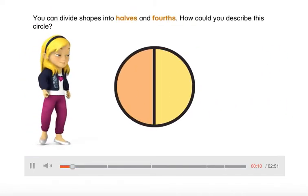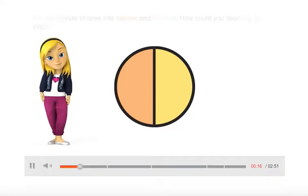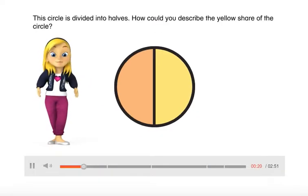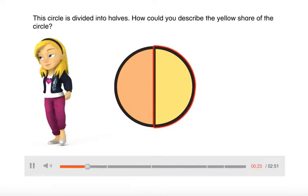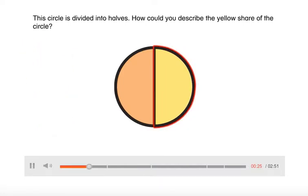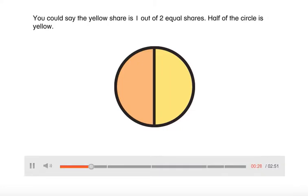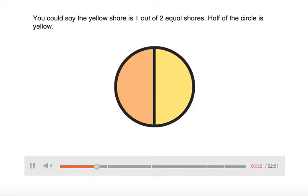You can divide shapes into halves and fourths. How could you describe this circle? This circle is divided into halves. How could you describe the yellow share of the circle? You could say the yellow share is one out of two equal shares. Half of the circle is yellow.